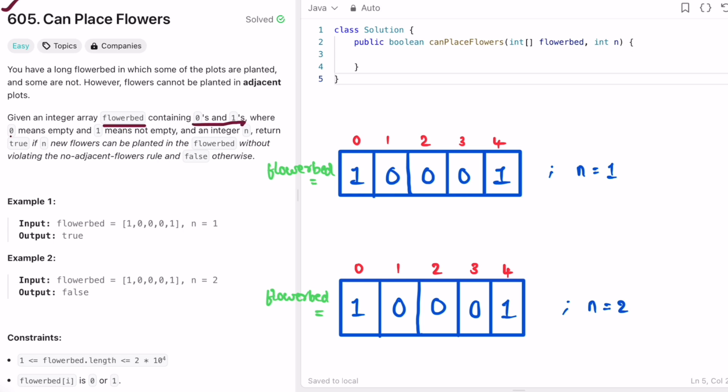We are given an integer array called flowerbed consisting of zeros and ones, where zero means it is empty and one means a flower is already placed. We are also given an integer n. We have to return true if n new flowers can be planted in the flowerbed without violating the adjacent flowers rule, else we return false.